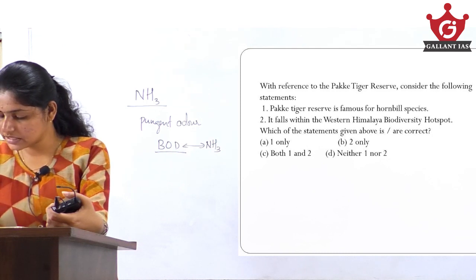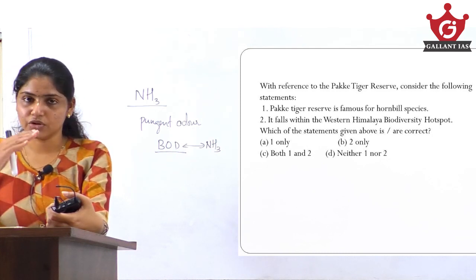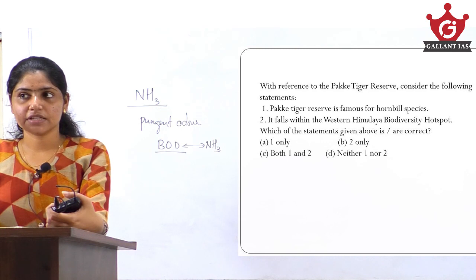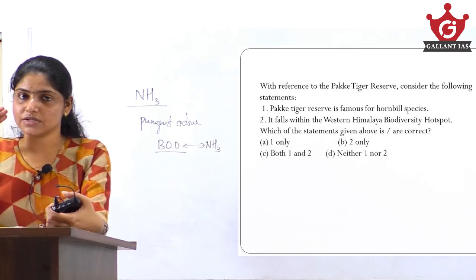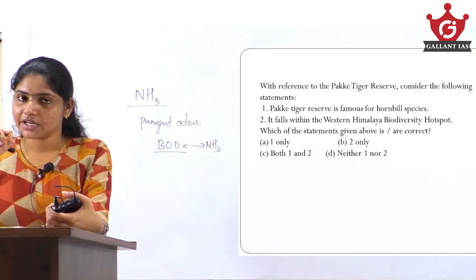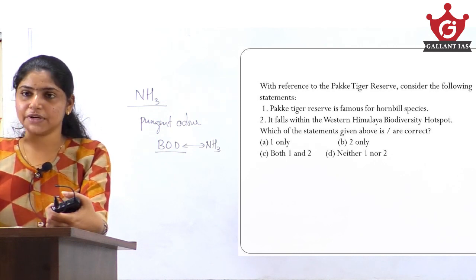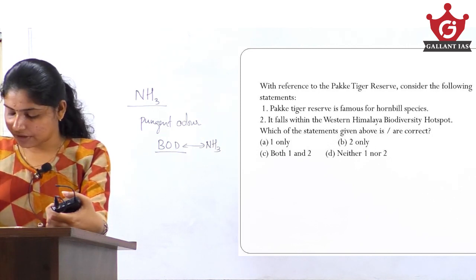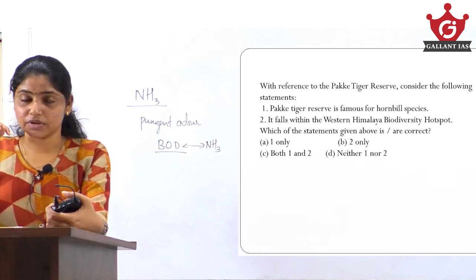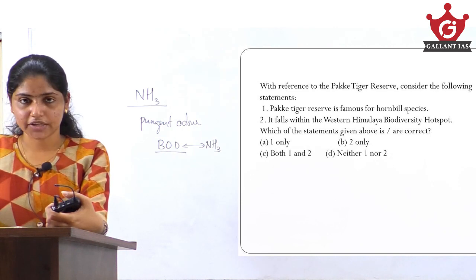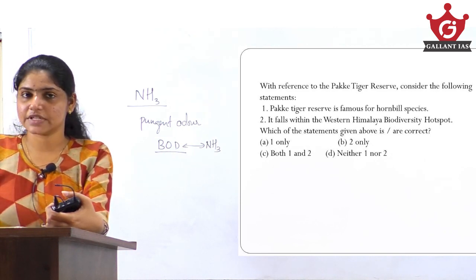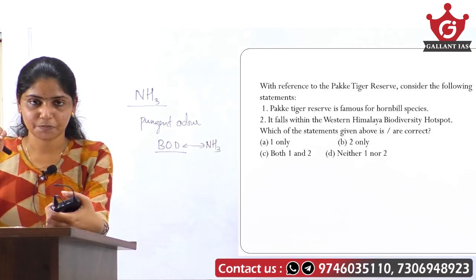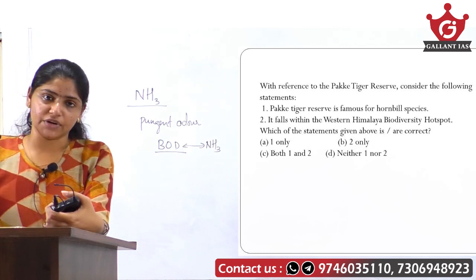If Pakke Tiger Reserve is in Arunachal Pradesh, which is in the northeastern part of India, then how can statement 2 be right? Statement 2 says it falls within the Western Himalayan biodiversity hotspot — that is contradictory. Both cannot be true at the same time. So you can eliminate option C — both statements 1 and 2 — because if Pakke Tiger Reserve is in Arunachal Pradesh, statement 2 is wrong.